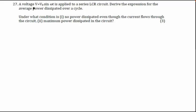Dear students, in this question it is given that a voltage V equals V0 sin(ωt) is applied to a LCR circuit — a circuit which has inductance, capacitance and resistance in series. We have to derive an expression for the average power dissipated over a cycle. There are two parts: part 1 asks under what conditions is no power dissipated even though current flows, and part 2 asks for maximum power dissipated.